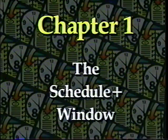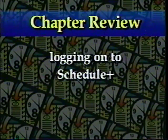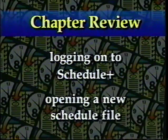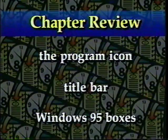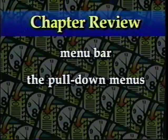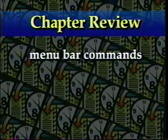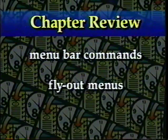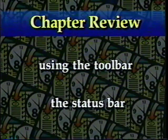Chapter 1 covered a lot of information, so let's review. We learned how to log on to Schedule Plus and open a new schedule file from the Select Local Schedule dialog box. At the top of the window, we learned about the program icon, the title bar, and the Windows 95 boxes. Then we learned about the menu bar, pull-down menus, fly-out menus, and dialog boxes. Finally, we learned how to use the toolbar and the status bar.